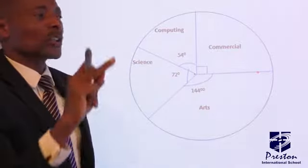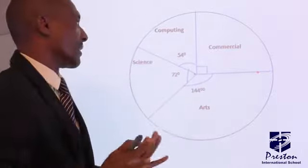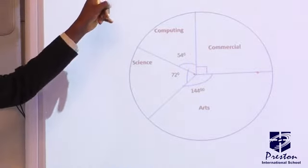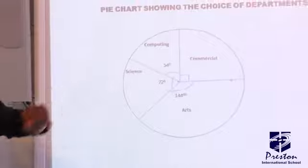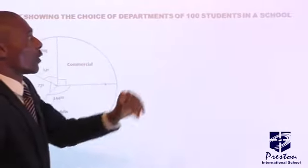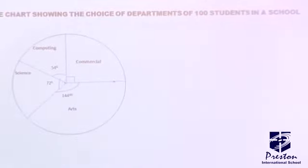By the time you go around, you will discover that it will give you exactly 360 degrees. Don't forget what I told us about the topic. This is the topic of this pie chart. It says, a pie chart showing the choice of departments of one hundred students in a school.